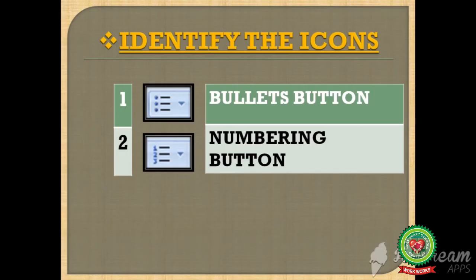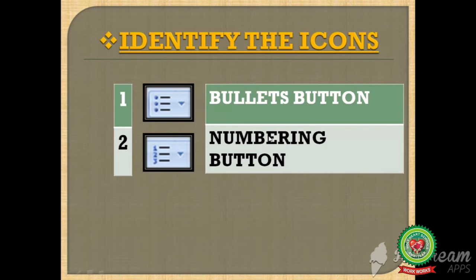Now we will do the identification of the icons. In the first icon, bullets are shown — so it is the bullets button. In the second icon, we have 1, 2, 3 numbers — so it is the numbering button. Students, note down the shortcut key and icon identification in your copy as well.